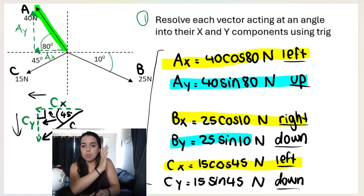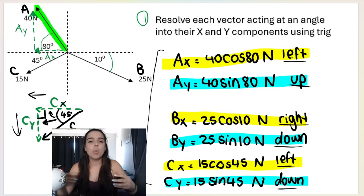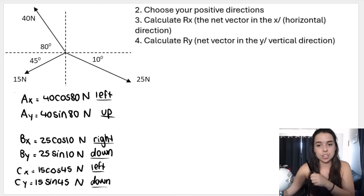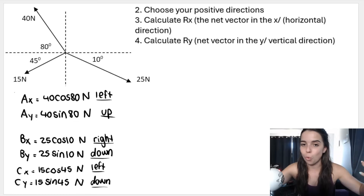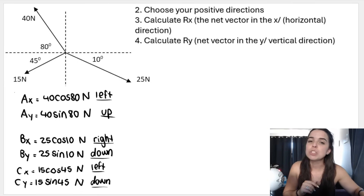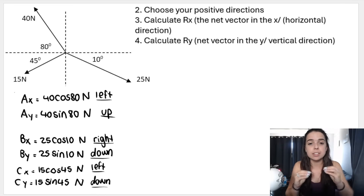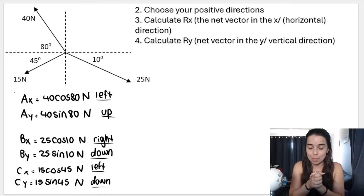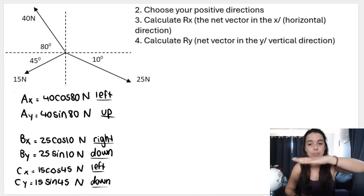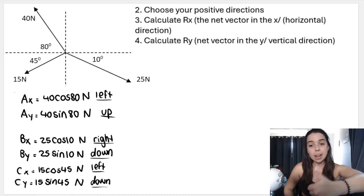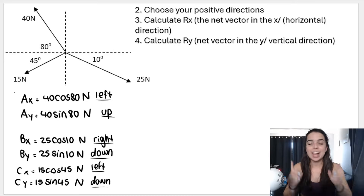We're going to group these together: everything going left or right — all the x-components, A-x, B-x, and C-x — go together; and everything going up or down — all the y-components, A-y, B-y, and C-y — go together. This leads us to our second step: we have to choose positive directions and calculate the resultant in the x direction and the resultant in the y direction. Basically, you add up all the pieces going left or right, then add up all the pieces going up or down, giving you one vector in each direction.